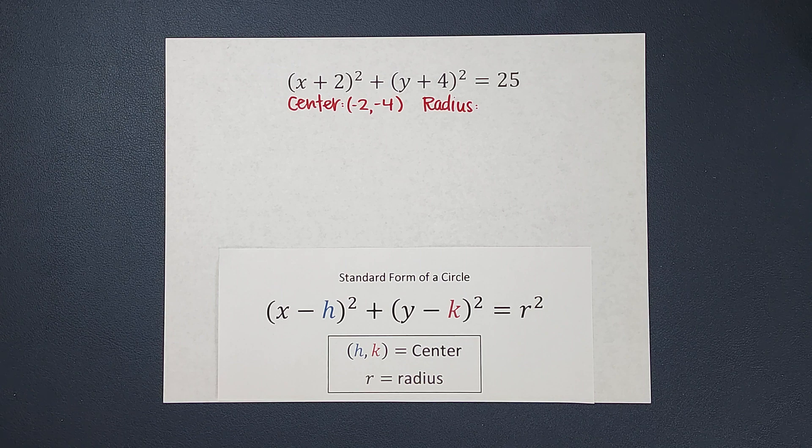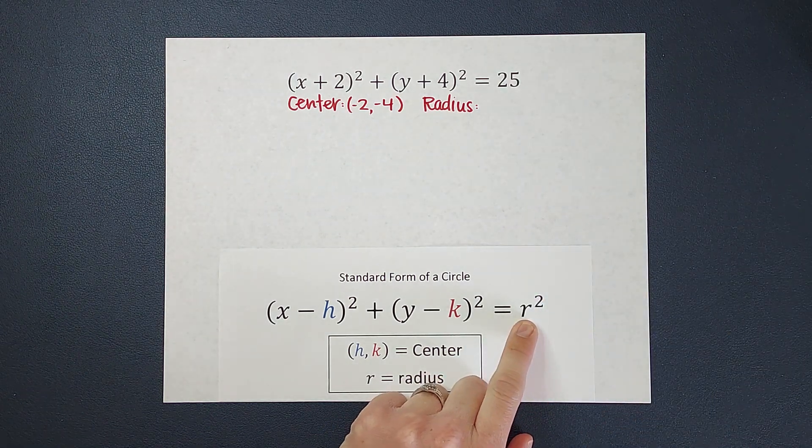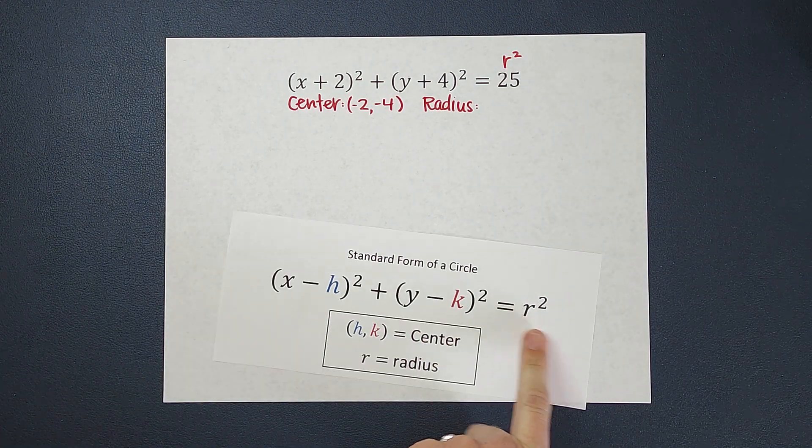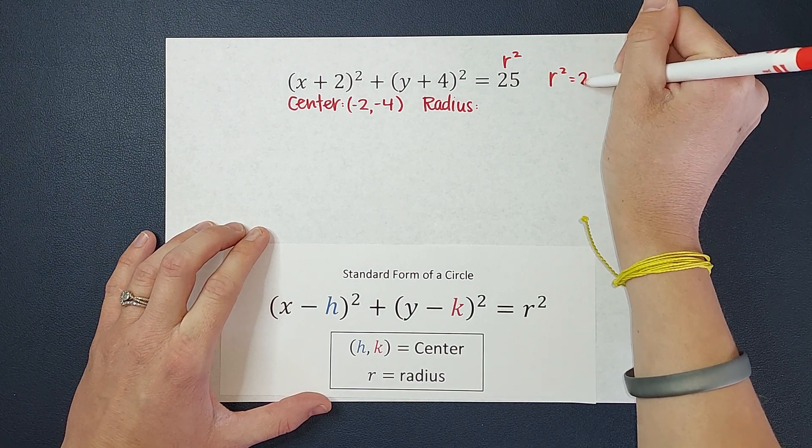Now my radius, we have here that this is equal to the radius squared. So 25 is not my radius, but it is my radius squared. So my radius squared is 25.